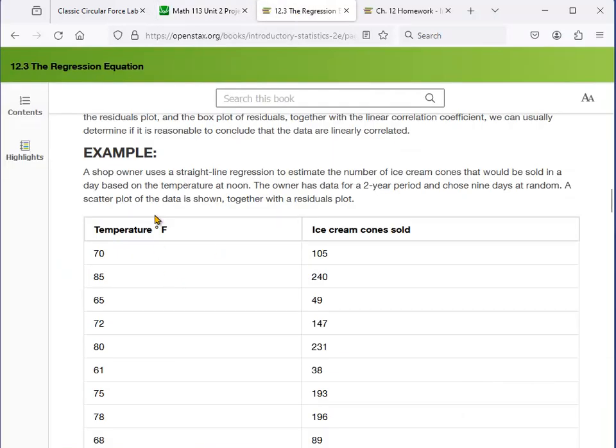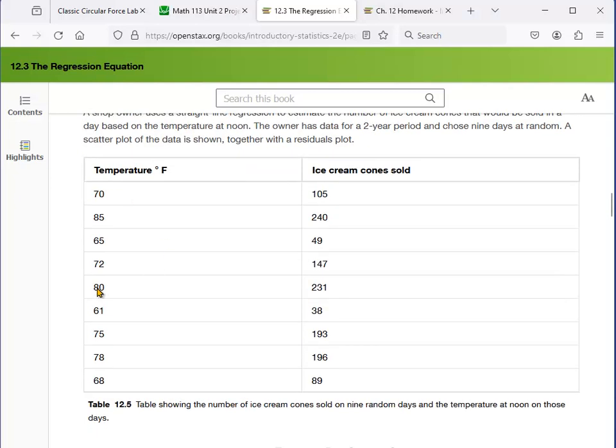The shop owner uses straight line regression - they actually give it away, straight line regression - to estimate the number of ice cream cones that would be sold. When you look at these numbers here, apparently these are not in order. Temperature, they probably measured it one day after another. When you put them in order, you can see that for low temperatures here, like in the 60s, they didn't sell that many ice cream cones. But for high temperatures like 85 or so, about 240 sold here. These kind of make sense, right?